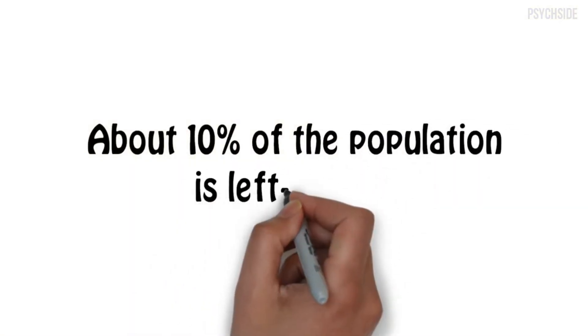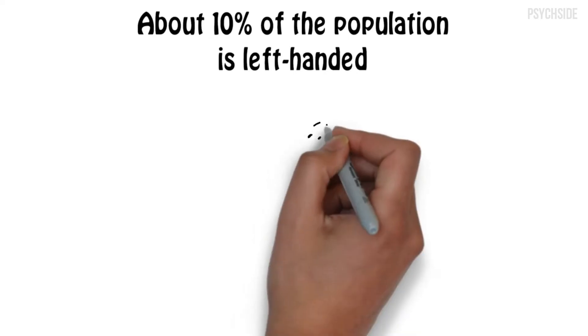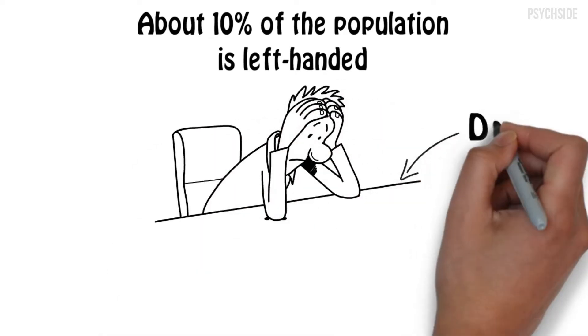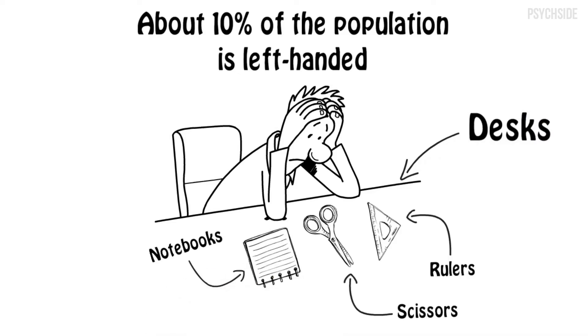About 10% of the population is left-handed. For the left-handed people of the world, life isn't easy. Everyday objects of use such as desks, spiral notebooks, scissors, and rulers are a constant battle to use.